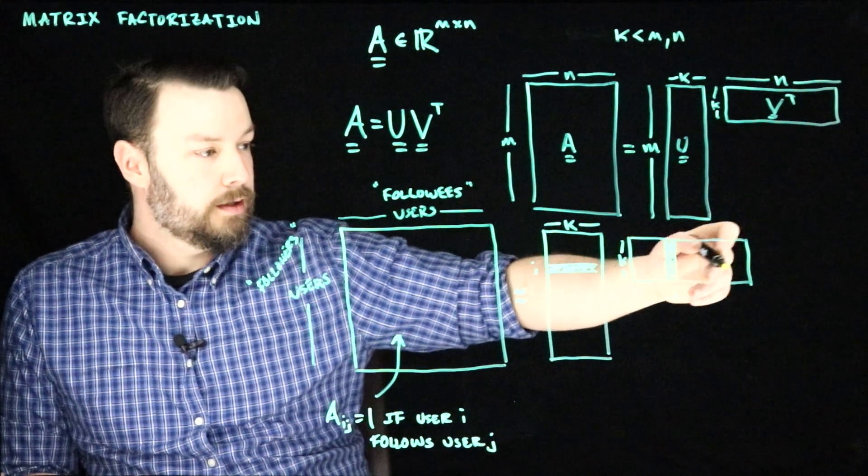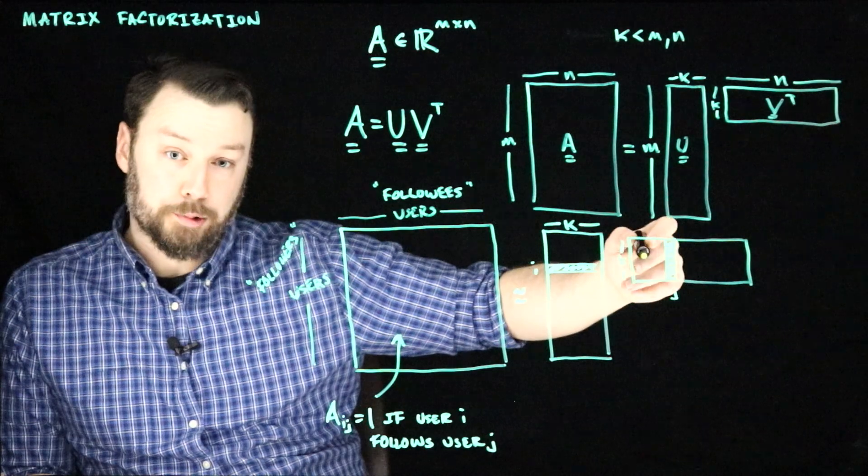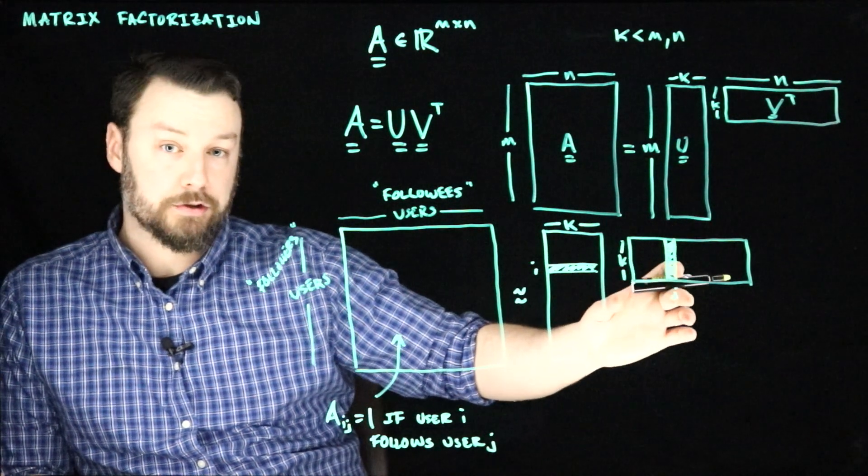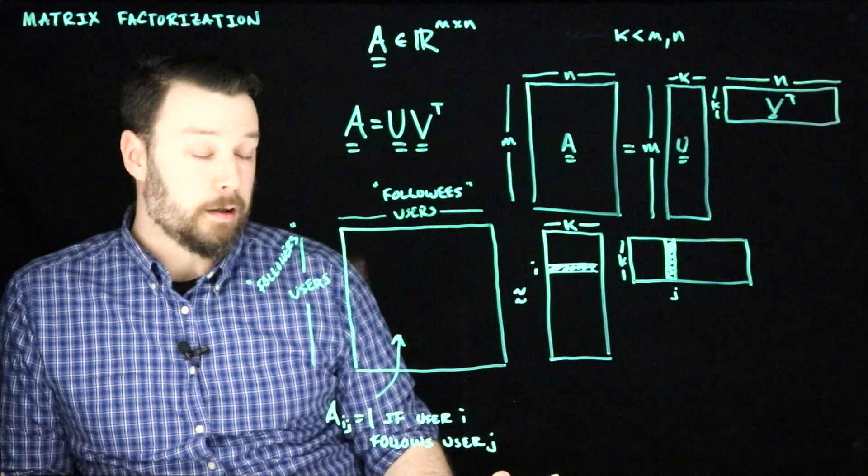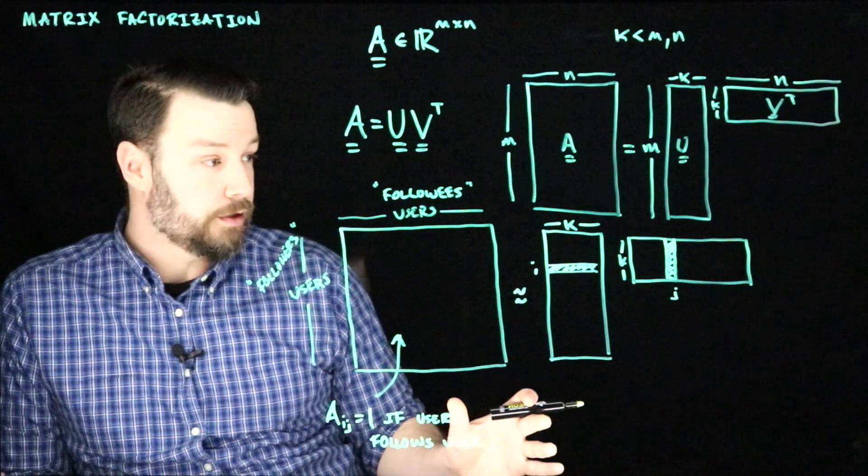And then this matrix is about the kinds of things that people produce. This matrix is trying to capture information about how someone gets followed. So I only produce content about woodworking. I don't produce content about 300 ZX twin turbos. So maybe I would have a different vector determining what I consume versus what I tend to produce.